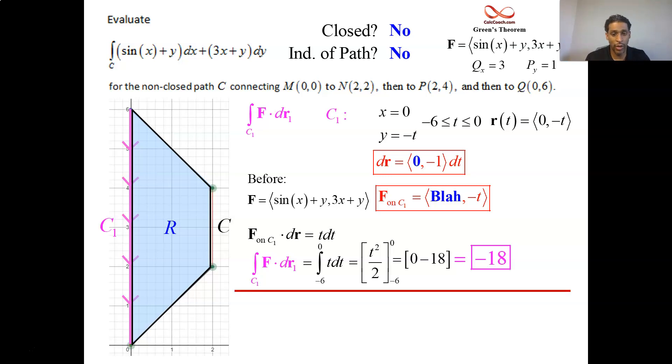So then what are you going to do with that? Well, we're just ready to put that together with the 16. 16 minus a minus 18, 34. So if you're not closed and you're not independent of path, you can still use Green's Theorem. You're going to have to add a path to close it and then subtract that back off to balance it out.